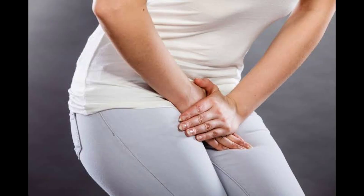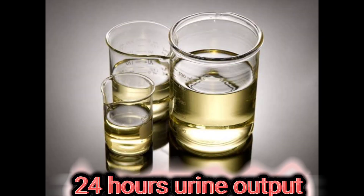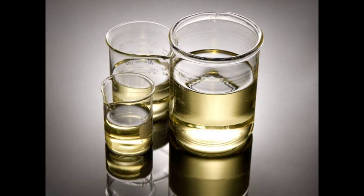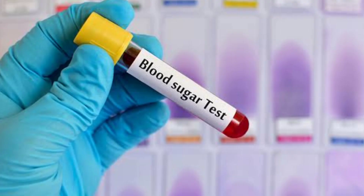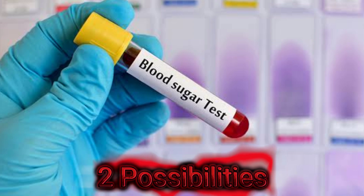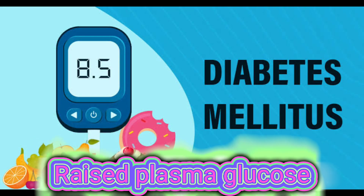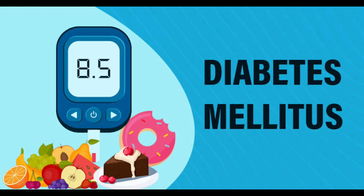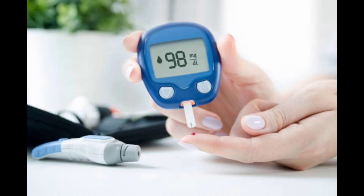Whenever a patient with polyuria comes to you, measure the 24-hour urine output first. If it is more than 3 liters per 24 hours, then check the plasma glucose level. You will have two possibilities: either the plasma glucose level is normal or raised. If it is raised, then it is truly a case of diabetes mellitus and you have to run further tests and treatment accordingly.